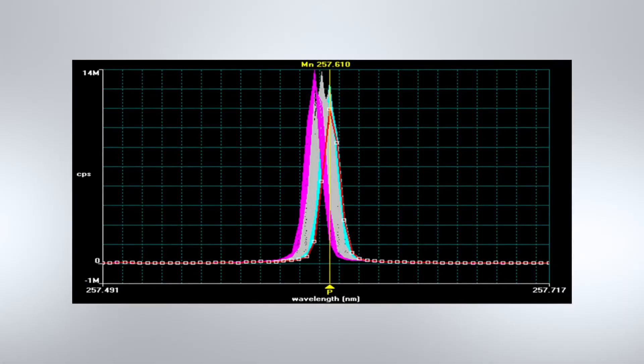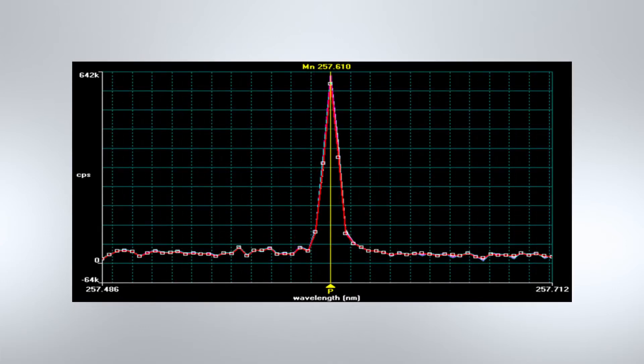Here is an example of the spectral shift seen when a solution of manganese is run as the instrument is warming up without dynamic wavelength stabilization. In sharp contrast, the second graph shows the same manganese solution during instrument warm-up with dynamic wavelength stabilization enabled.